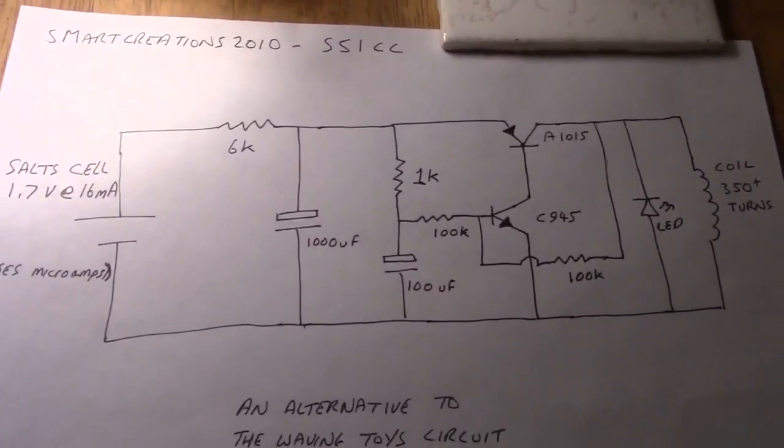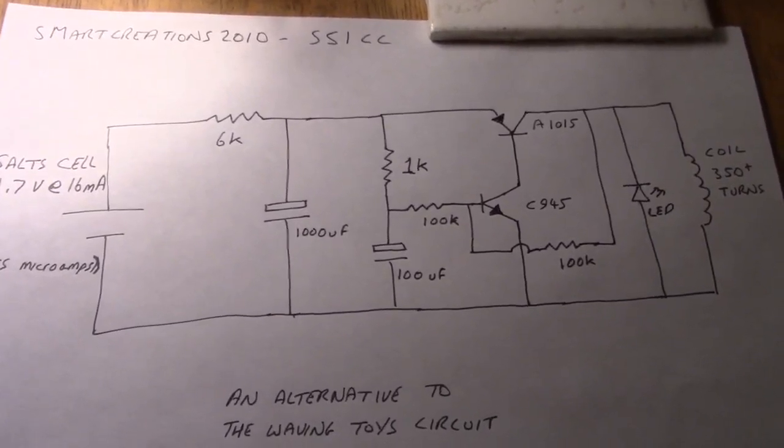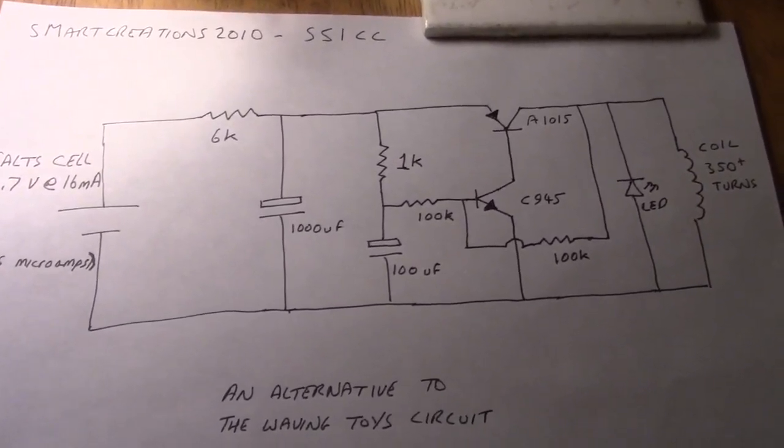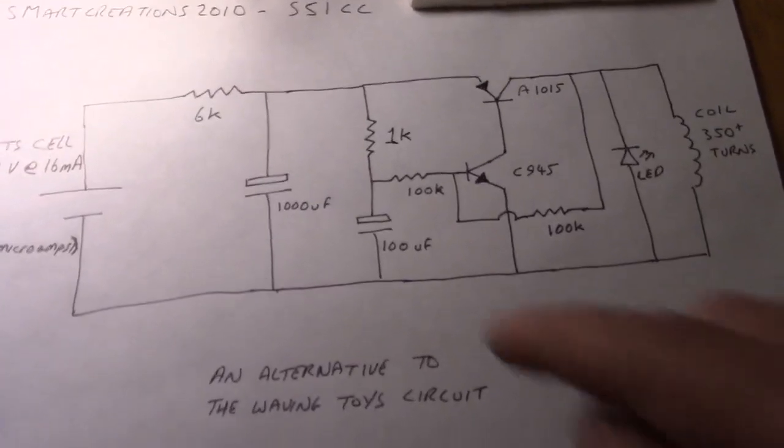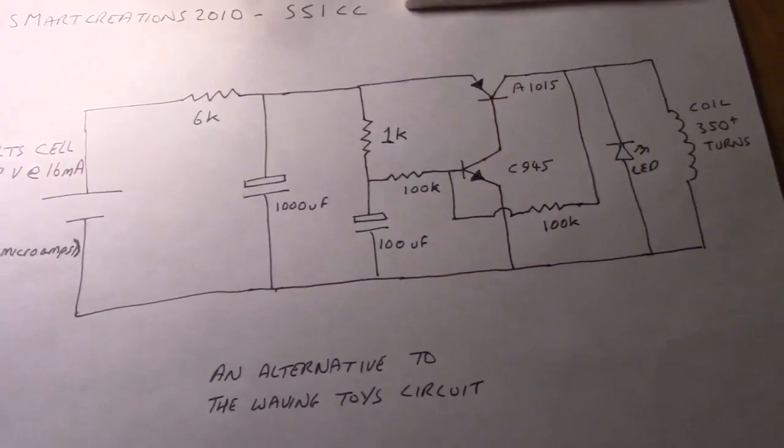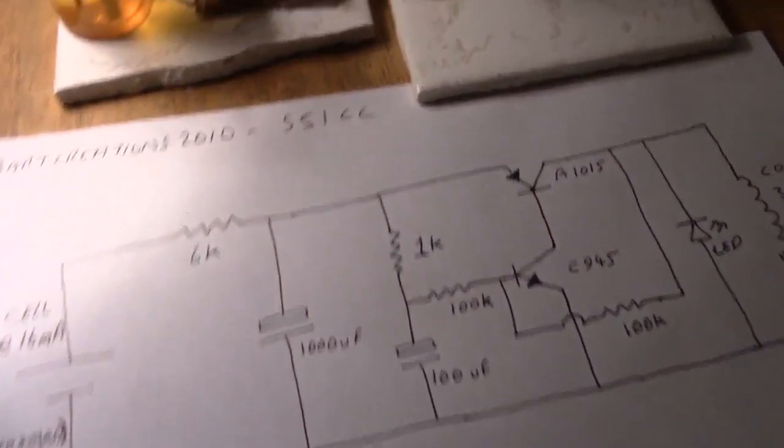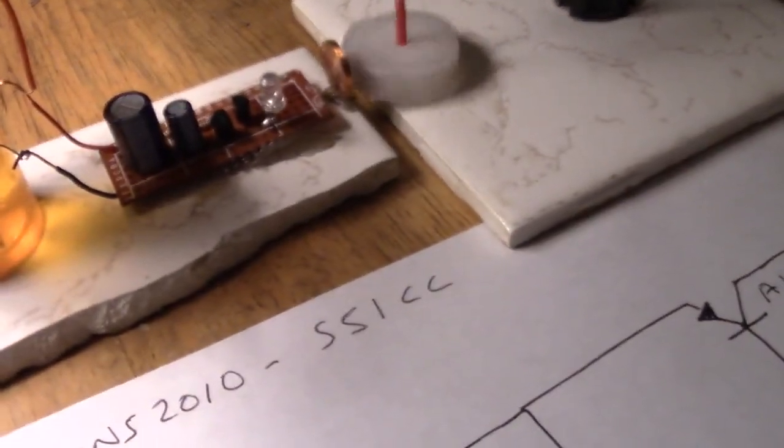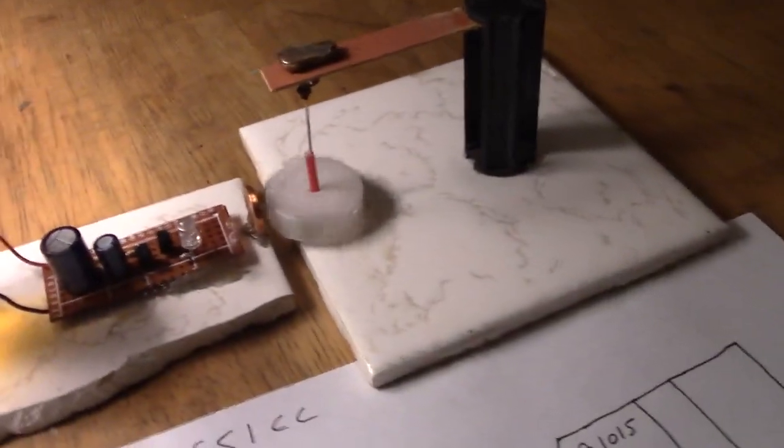So the setup is slightly different. The input is the salt cell. I've also got a 2SA1015 as the PNP and a 2SC945 as the NPN. So that's those two transistors. And my coil as I say is a 500 ohm small coil from one of these little dancing guys. And that's powering that away pretty nicely.